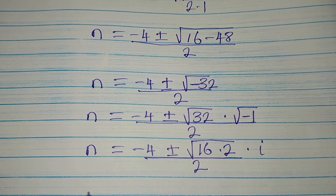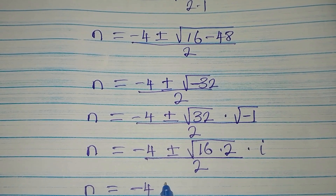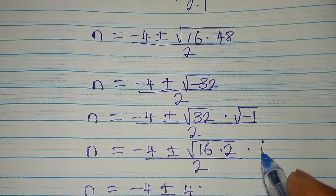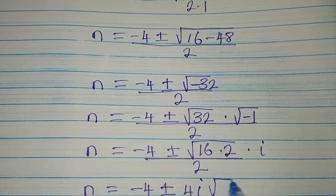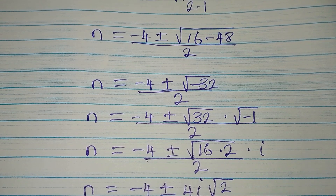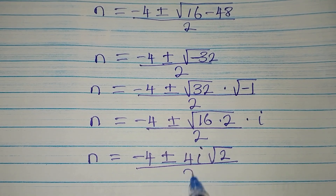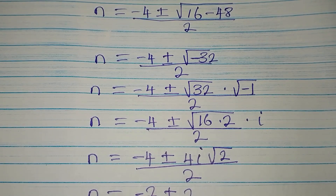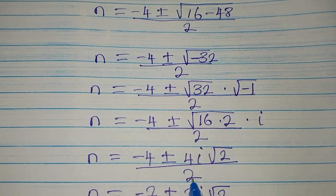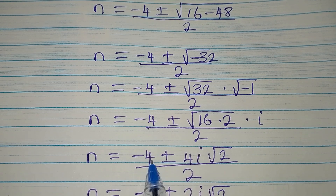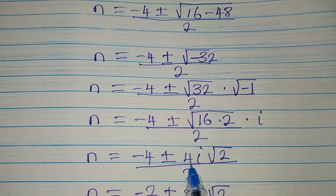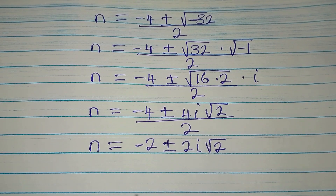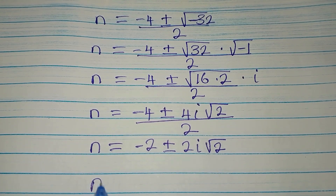So n equals minus 4 plus or minus 4i root 2, all divided by 2. Dividing through by 2: minus 4 over 2 is minus 2, 4i over 2 is 2i, and root 2 comes down. So n equals minus 2 plus or minus 2i root 2. This is a two-in-one solution because of the plus or minus.